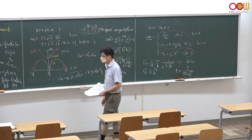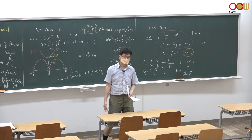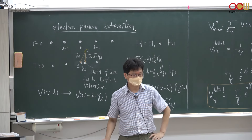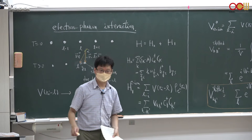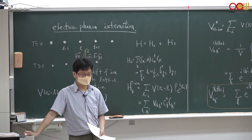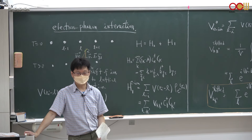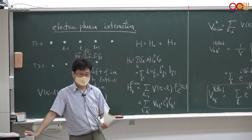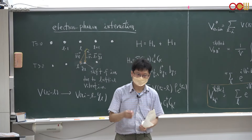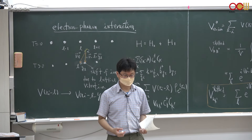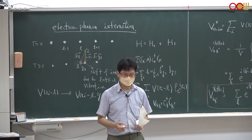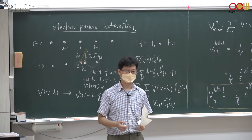That concludes magnetism and spin-wave analysis at low temperatures. We now move on to the final two chapters: electron-phonon coupling and the BCS theory of superconductivity in ordinary metals. In a realistic solid, we have lattice vibrations (phonons), electron-electron Coulomb interactions, and electron-ion interactions. Since ions can vibrate, the electron-ion potential is modified by lattice vibrations, giving rise to electron-phonon interactions.